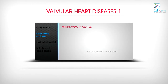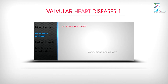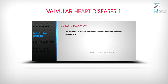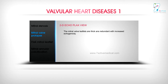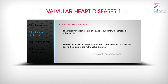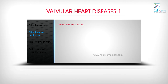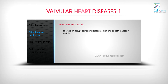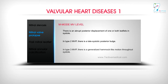Mitral Valve Prolapse — 2D Echo PLAX View. The mitral valve leaflets are thick and redundant with increased echogenicity. There is a systolic bowing movement of part of either or both leaflets above the plane of the mitral valve annulus. M Mode MV Level: There is an abrupt posterior displacement of one or both leaflets in systole. In type 2 MVP, there is a late systolic posterior bulge; in type 3 MVP, there is a generalized hammock-like motion throughout systole.